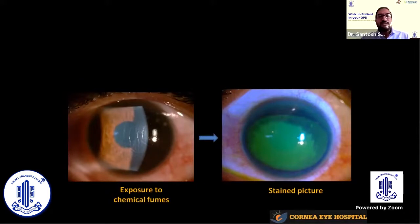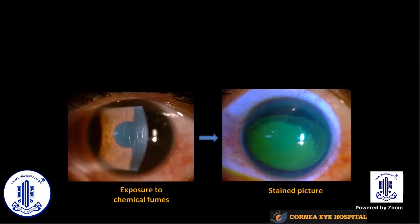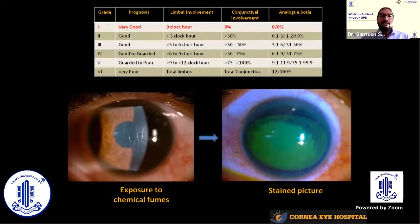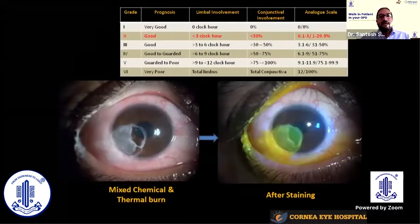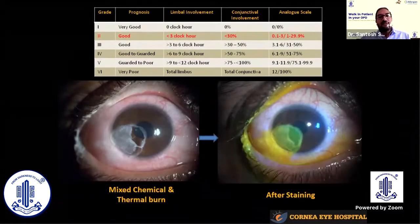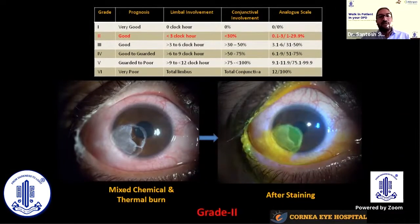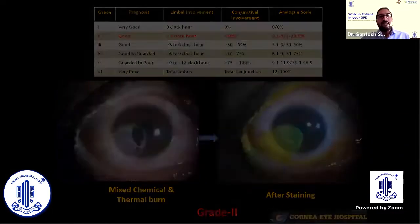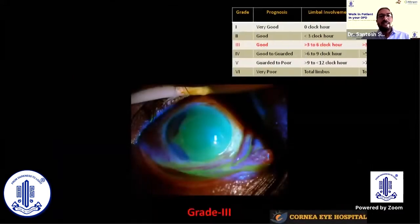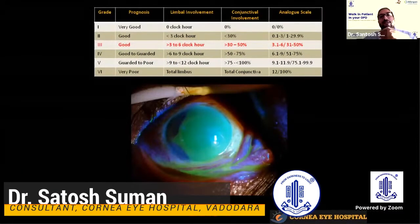This case was referred after chemical fume exposure. In the stained picture, you can see that only the cornea is taking stain; the limbus and conjunctiva are not involved. This would be classified as Grade 1, where zero clock hours of limbus and zero percent conjunctiva are involved. In another case, less than three clock hours of limbus and less than 30% of conjunctiva are involved — this is Grade 2 of Dua's classification.